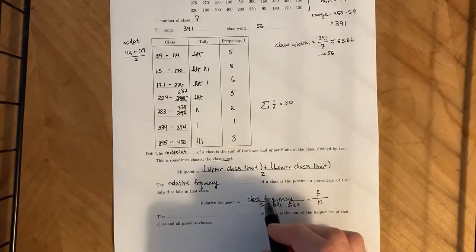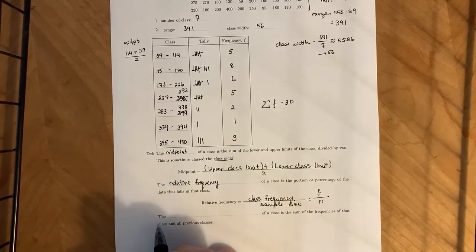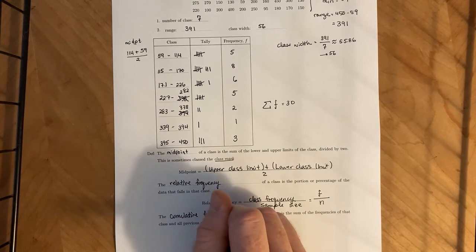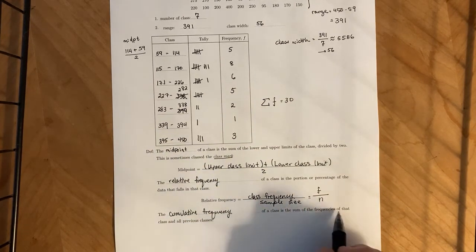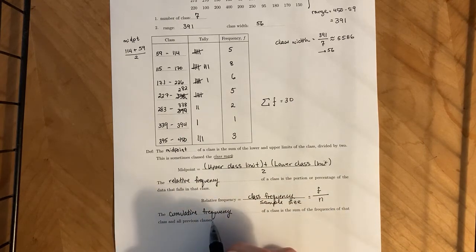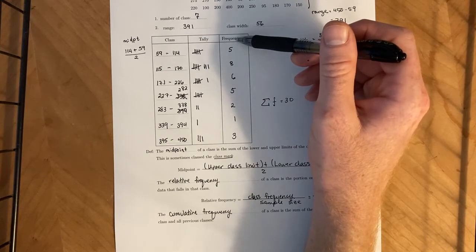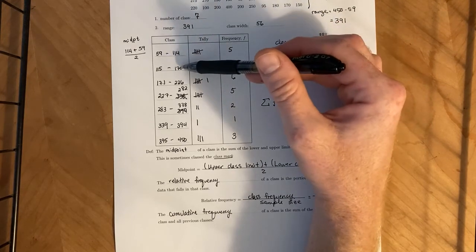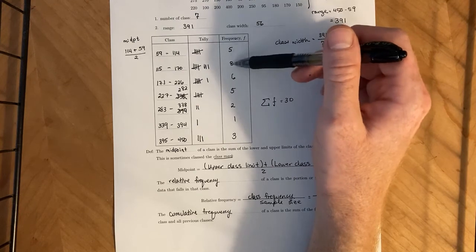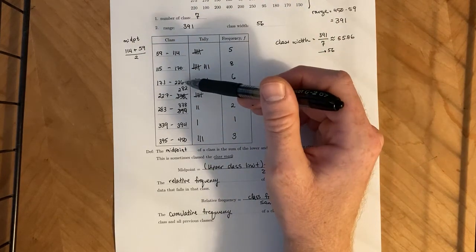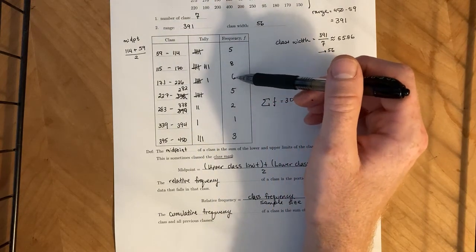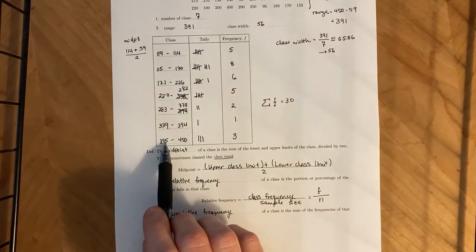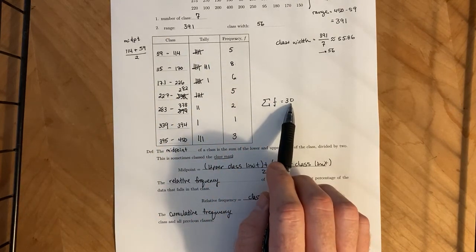Then once you have all of this information, another number that you can keep track of is what is called the cumulative frequency of a class, which is just the sum of the frequencies of that class and all previous classes. So in this one, the cumulative frequency for the second class is going to be 13, 5 plus 8. The cumulative frequency for the third class is going to be 19 because that's 5 plus 8 plus 6. And then it just keeps going down. And the cumulative frequency for the last class should be the total number of data points that you have. It should be 30.